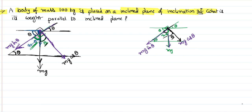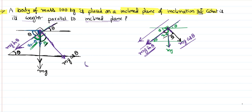It is now clear that mg cos theta is perpendicular to the inclined plane, and mg sin theta is parallel to the inclined plane. Looking back at the question — what is the weight parallel to the inclined plane? — the only force acting parallel to the inclined plane is mg sin theta. So the problem is essentially solved. Weight parallel to the inclined plane is mg sin theta.